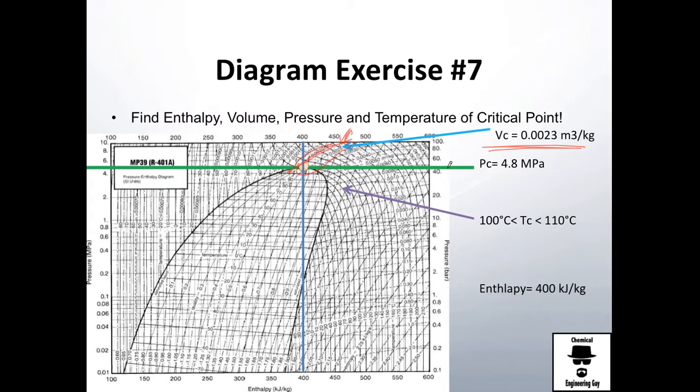I got the enthalpy, which is the x-axis. I got the volume, which is this line here. Actually, it's a diagonal. I got the pressure, which is the y-axis. And the temperature is the isotherm, which goes like that.